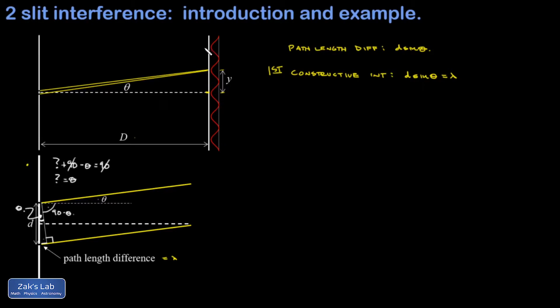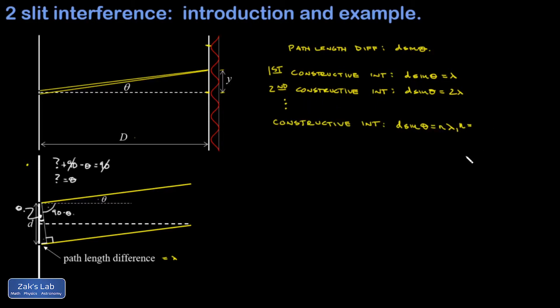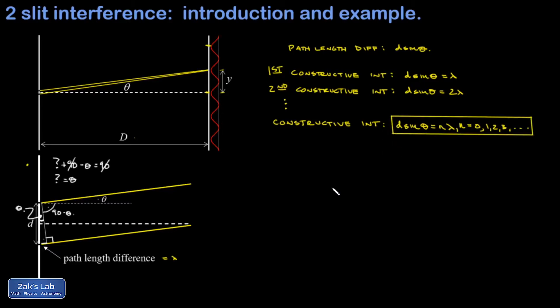To generalize: the second constructive interference occurs when the path length difference equals two wavelengths, and this continues for three, four, or five wavelengths, and so on. The general formula for angles giving constructive interference is d·sinθ = nλ, where n is an integer. I include n = 0 for the central maximum, and these interference maxima occur symmetrically in both directions.